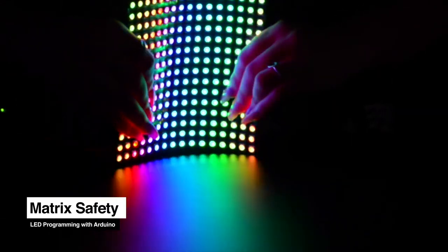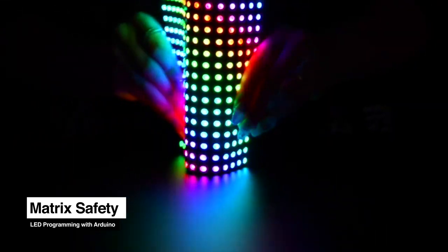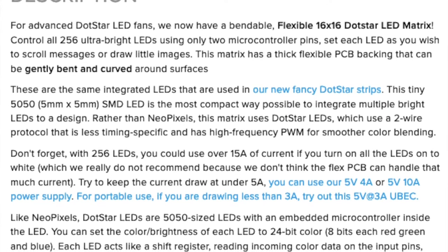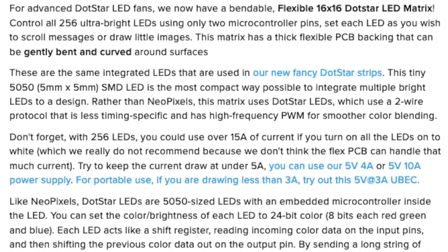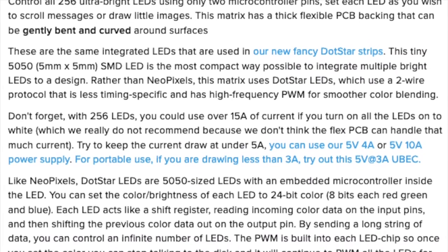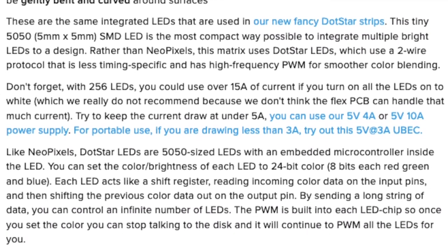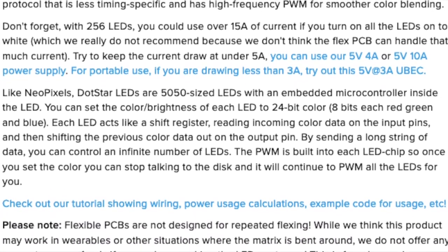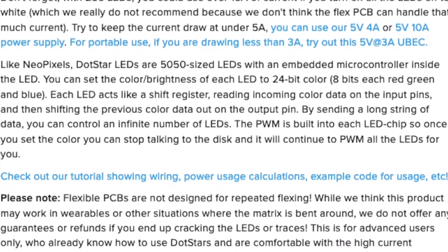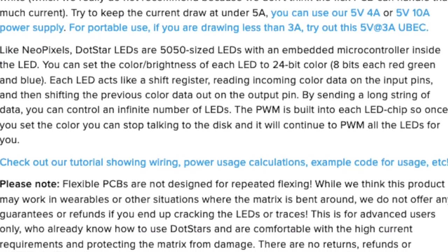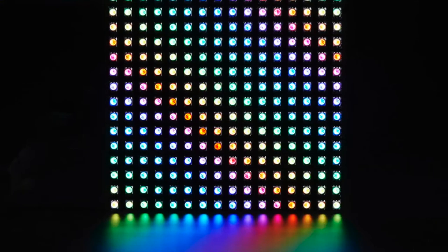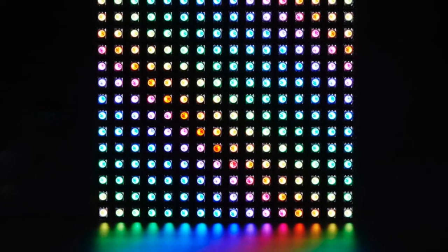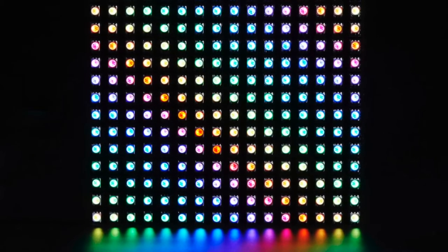Once everything is working, it's time to start developing code for our 16x16 matrix. It's extremely important to keep the power draw low when working with the NeoPixel matrix — I've set brightness to 64 on all examples. With 256 LEDs, you could draw over 15 amps if all LEDs are white, which we don't recommend. Try to keep current draw under 5 amps, don't flex the PCB, and always keep the matrix flat.